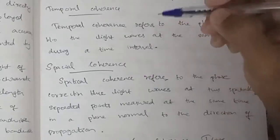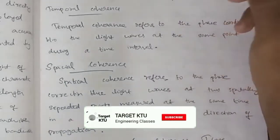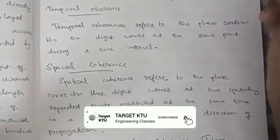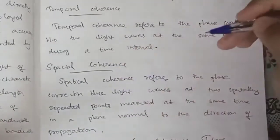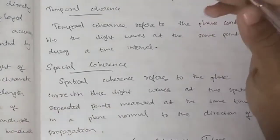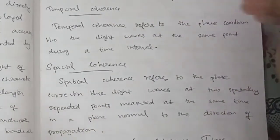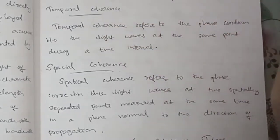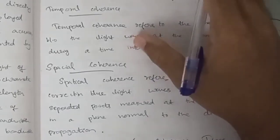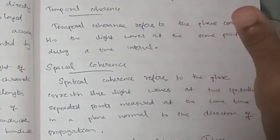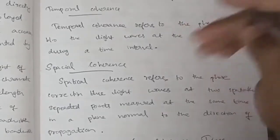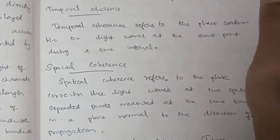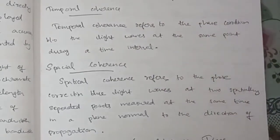Temporal coherence refers to the phase coordination between light waves at the same point over a time interval. Spatial coherence is the phase correlation between light waves at two spatially separated points at the same time, in a plane normal to the direction of propagation.